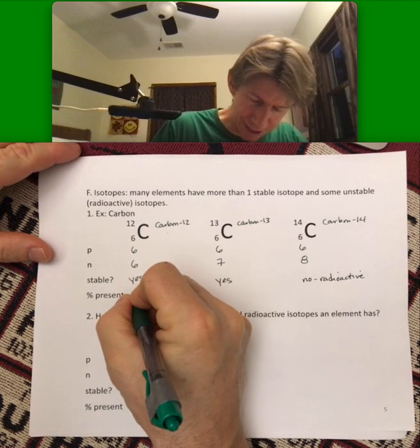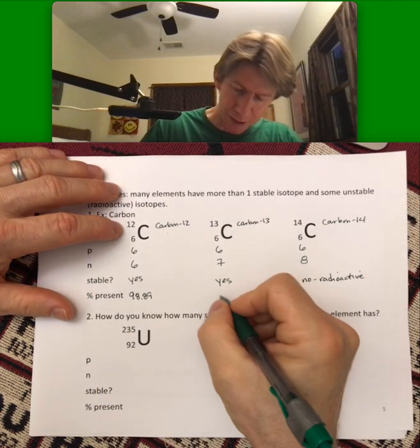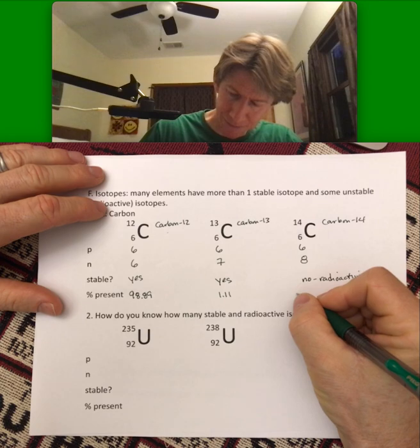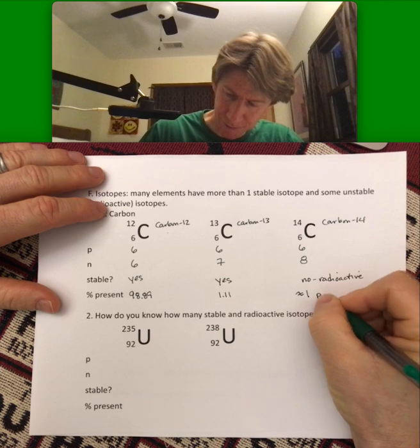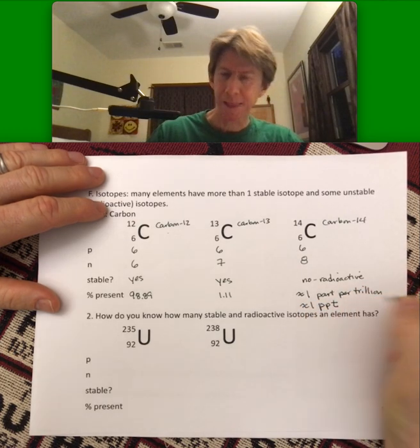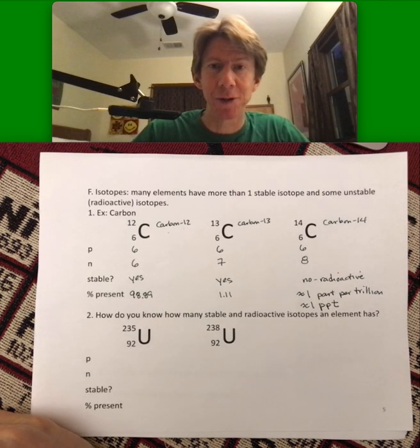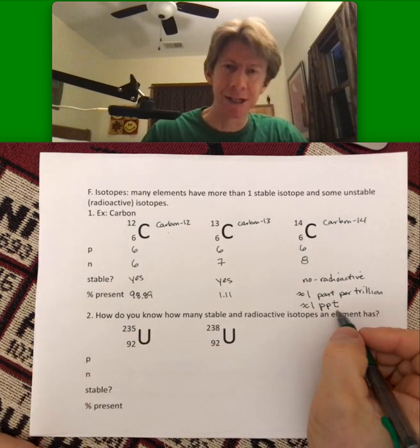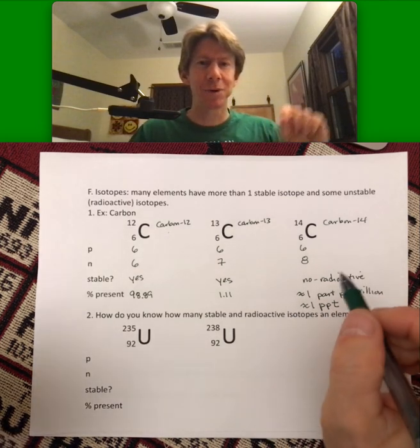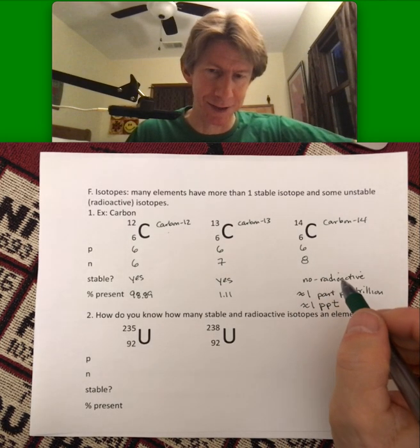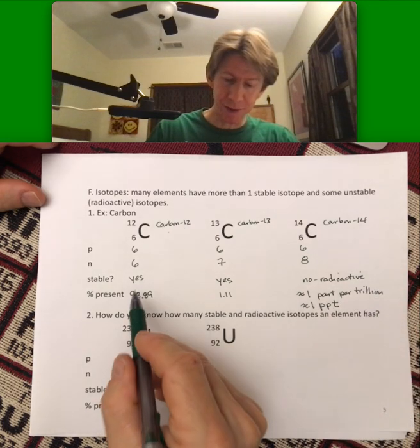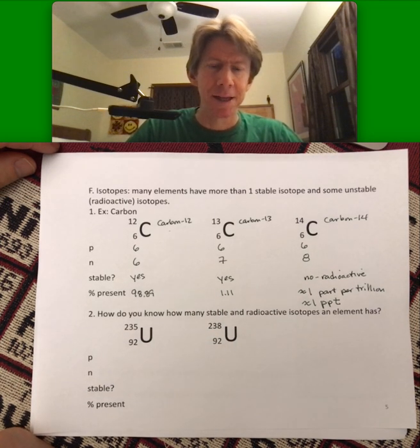Percent present is 98.89% for carbon-12, 1.11% for carbon-13, and carbon-14 is approximately one part per trillion carbon-14, which is abbreviated 1-PPT. And we'll talk more about that as you go through general chemistry as well, units for parts like this. But let's suffice it to say, on the sig figs here, these add up to 100%. So that's like 0.00000000001 or something out there. So it exists, but there's not very much. And it doesn't affect the math that we're going to do coming up. So these are the two stable isotopes of carbon, carbon-12 and carbon-13.